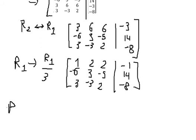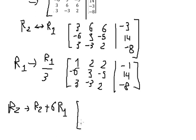For row number two, we will put row number two plus six times row number one, because we want to cancel the negative six in here. So we keep row number one as: one, two, two, negative one.